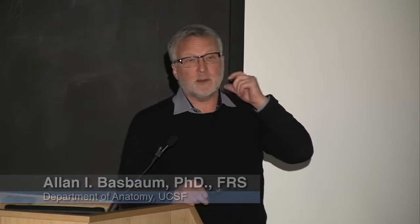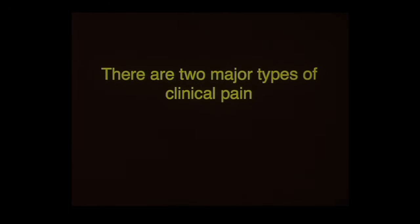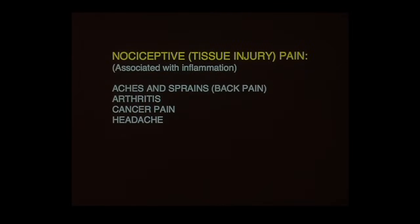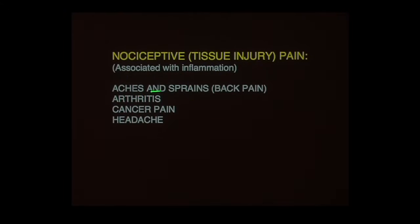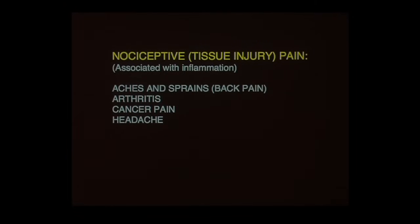Acute pain is not a problem — we'll talk about the mechanisms of generating acute pain. But the real big problem, of course, is clinical pain: chronic, persistent, ongoing pain. There are two major types. The first is what we call nociceptive pain, or pain associated with tissue injury — the typical aches and sprains, arthritis, cancer pain, headache and migraine. This is probably the most common type of pain.